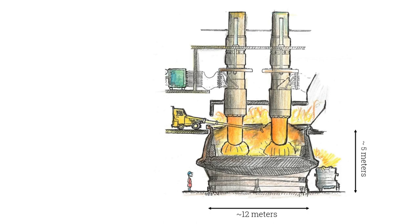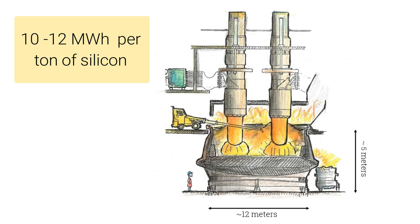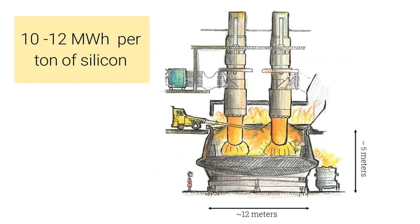Silicon is produced in large industrial furnaces. The production process requires large amounts of energy — 10 to 12 megawatt hours per tonne of silicon produced — as well as utilising high temperatures up to 2000 degrees C in the lower part of the furnace.